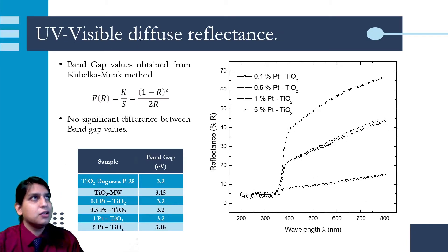Through ultraviolet visible diffuse reflectance, we calculated the bandgap of the material via Kubelka-Munk method. As we can observe, there is no significant difference between the bandgap values of the material, except for the highest load of platinum, which presents a decrease of 0.02 electron volts.